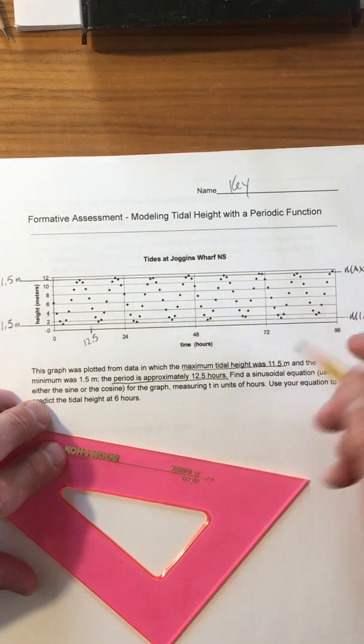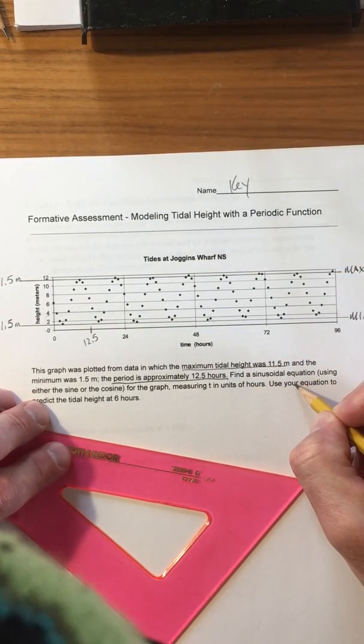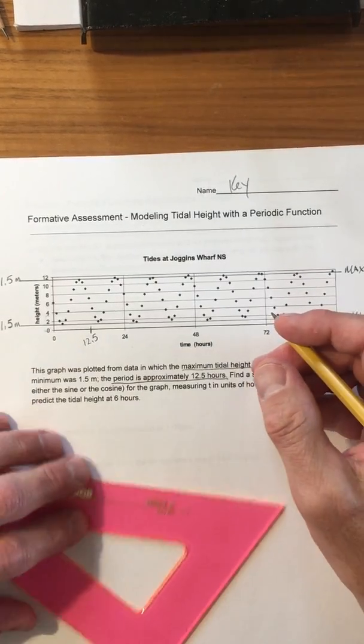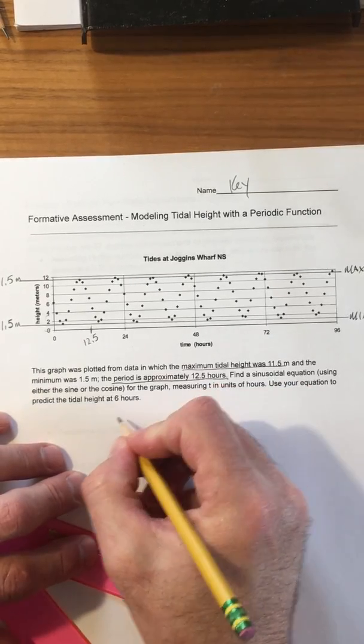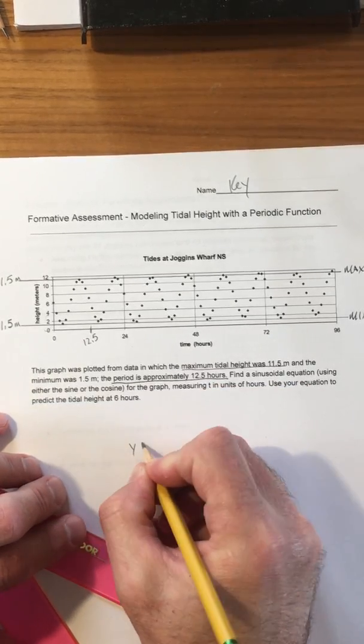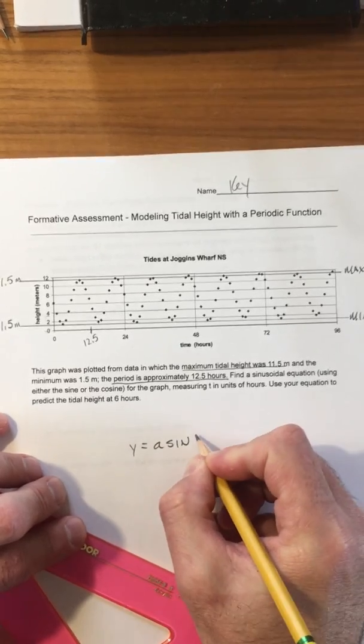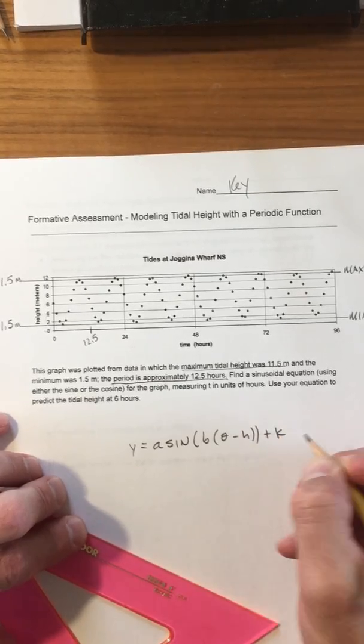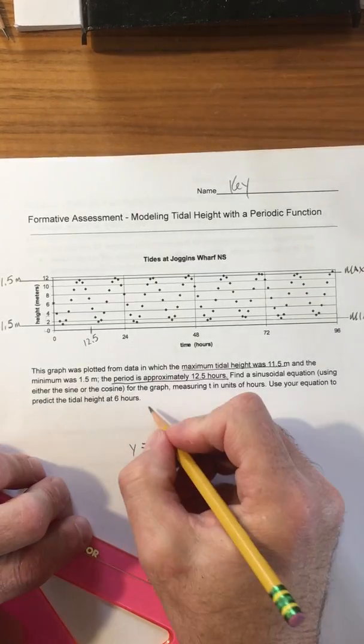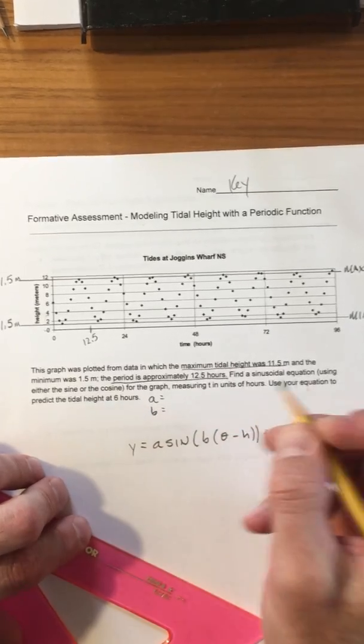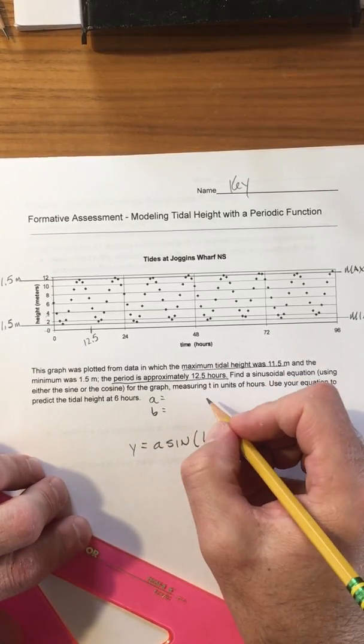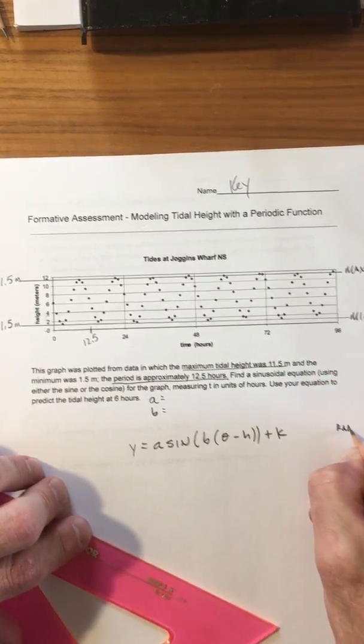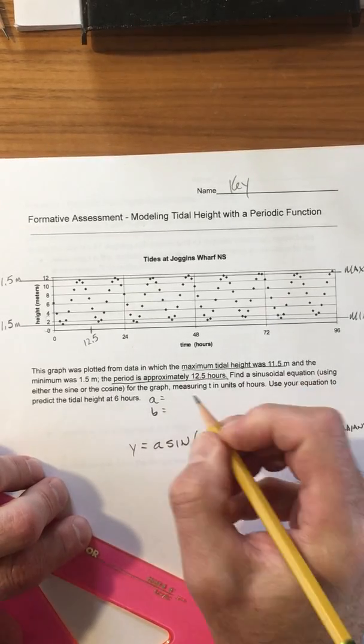We need to find a sine equation measuring t in hours and use the equation to predict the height at six hours. So here's the things that we need to know: we're going to write this equation, it's going to be y equals a sine b theta minus h plus k. So we need to find the amplitude, the number of cycles in two pi because we're going to do this in radians, and then we need the horizontal shift and the vertical shift.